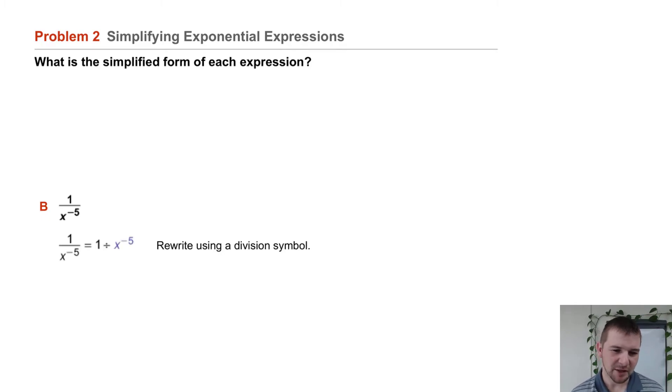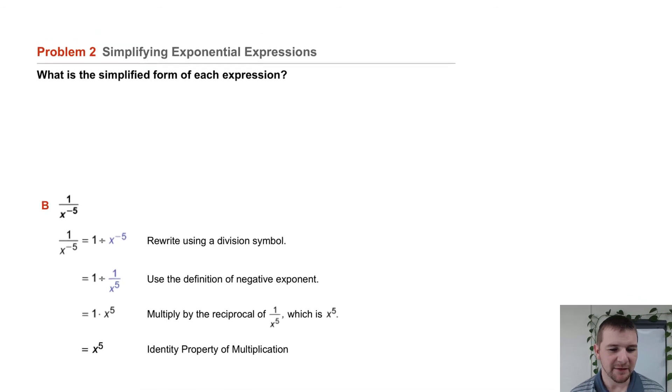We can perform the division. We think of this as being 1 divided by x to the negative 5th power. Rewrite x to the negative 5th power as 1 over x to the positive 5th using the same property. That's just 1 times x to the 5th power, and that's x to the 5th.